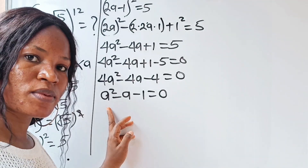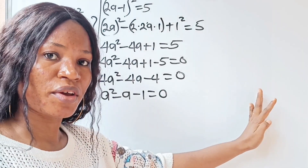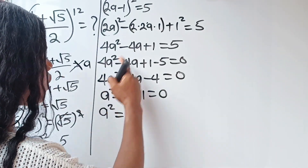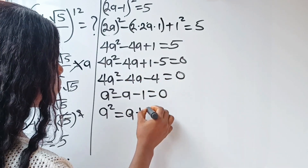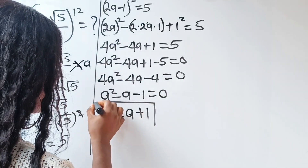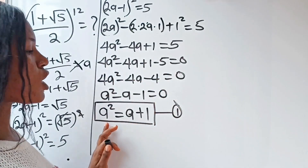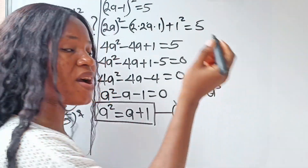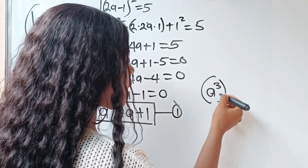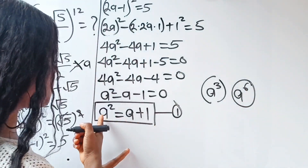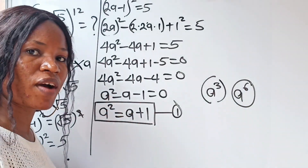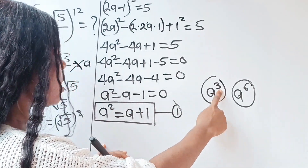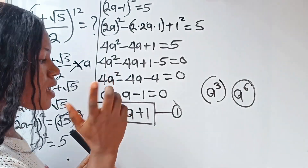Now, let's make a² the subject of the formula. So we have a² = a + 1. This is a very important equation — let's call it equation 1. Note that we are trying to get a³ and a⁶, since a¹² = (a⁶)² = ((a³)²)². We must need a² to simplify them, and we've found it.